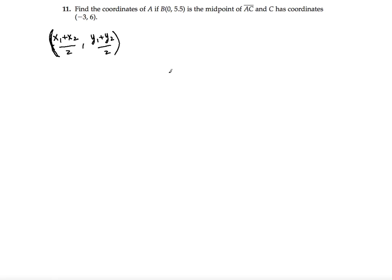So now we have to understand what is known here. The known part is, let's see, find the coordinates of A if B is the midpoint. So we can say B is the midpoint. So B is here, and C has coordinates negative 3, 6.